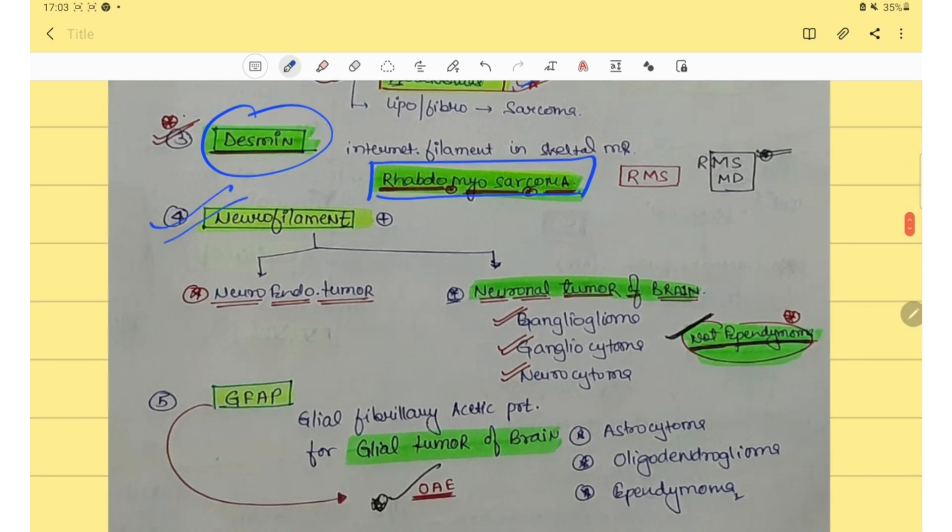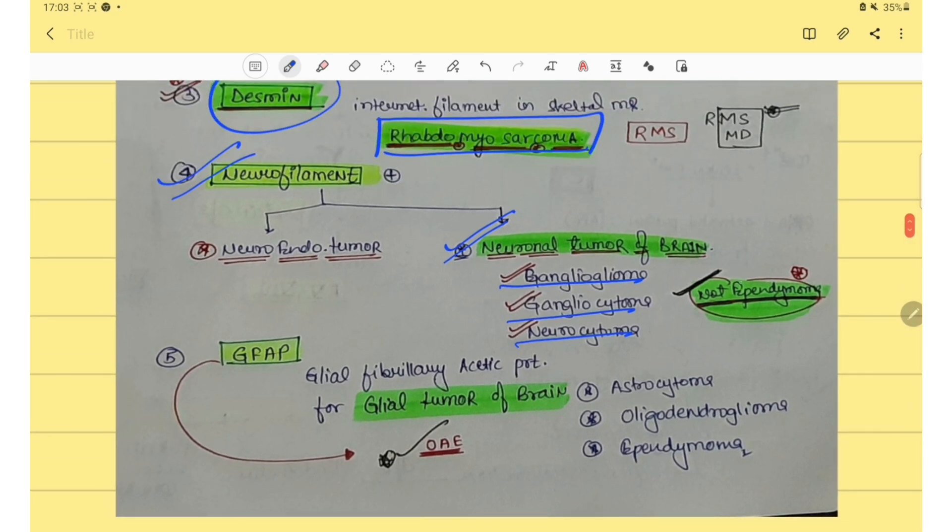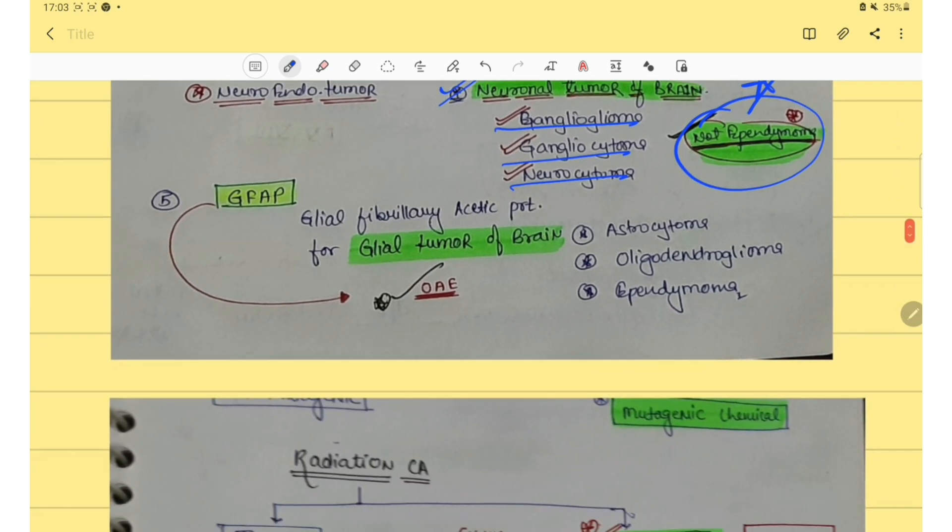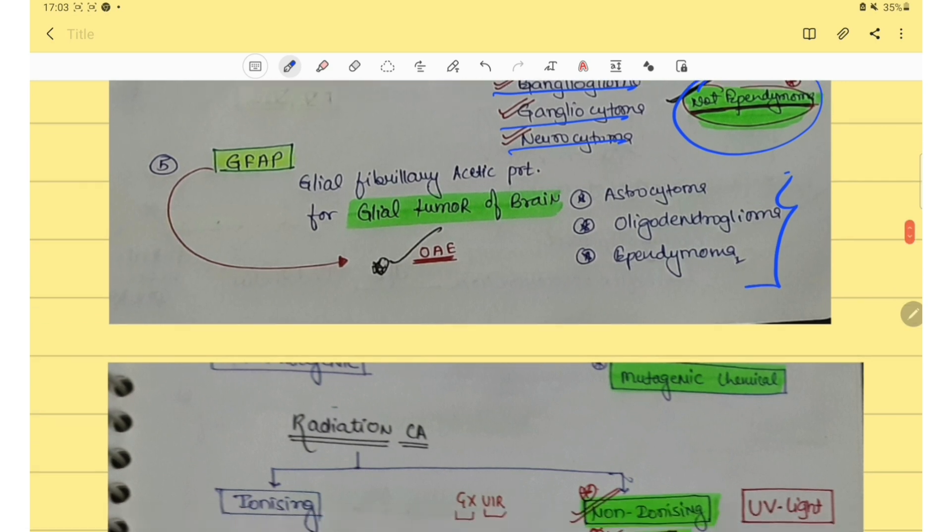Then neurofilament. In neuronal tumor of brain, ganglioglioma, gangliocytoma and neurocytoma. Most important is it is not positive in ependymoma. Then GFAP, GFAP is positive in astrocytoma, oligodendroglioma and ependymoma.